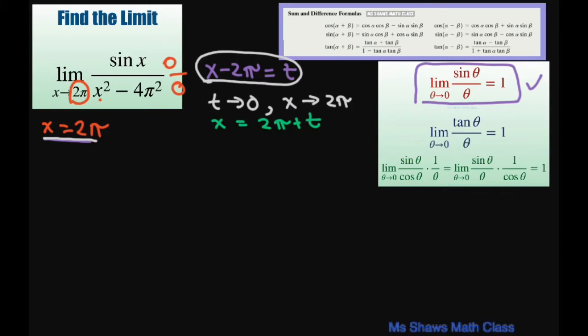All right, so now let's substitute everything in. We're going to try to get it in this format. So now we have the limit as t approaches 0, we got that, and then we have sine of x.